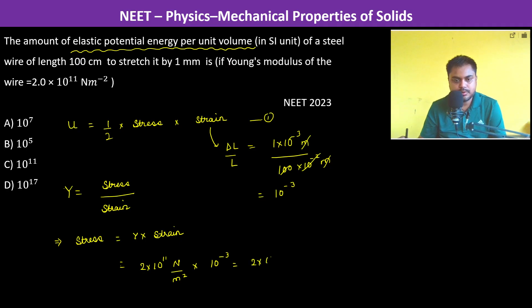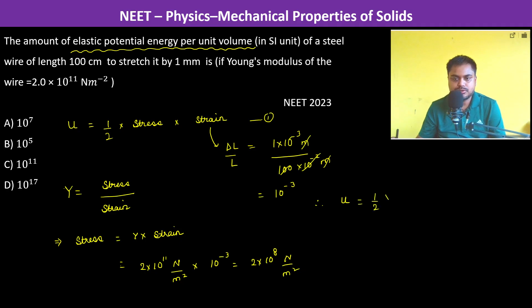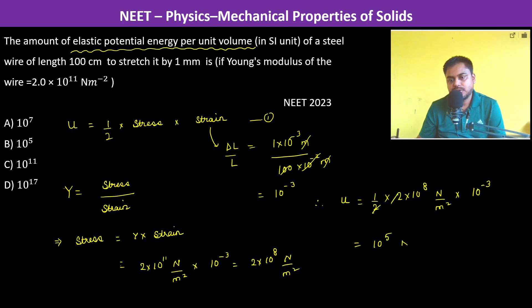Therefore, the elastic potential energy per unit volume equals half into stress (2×10⁸ N/m²) into strain (10⁻³), which gives 10⁵ N/m².